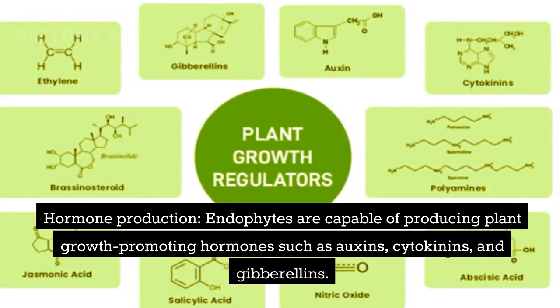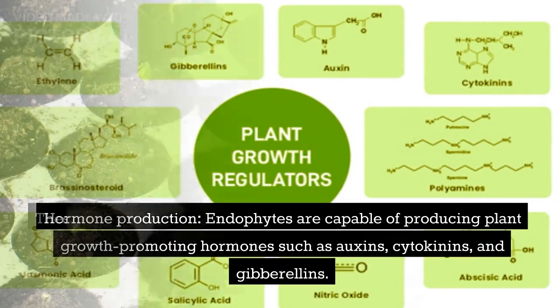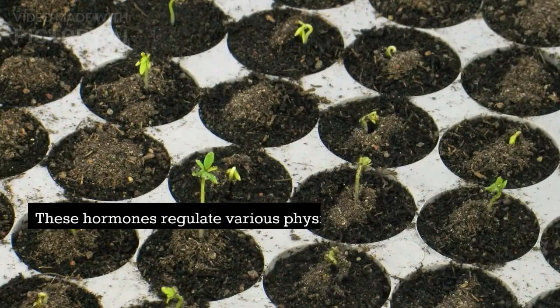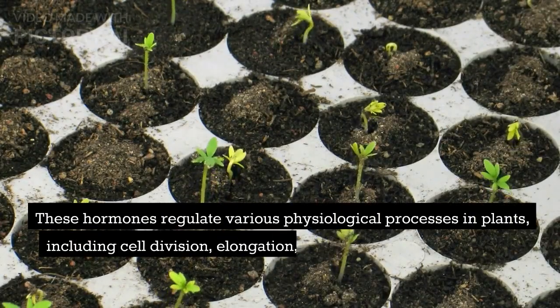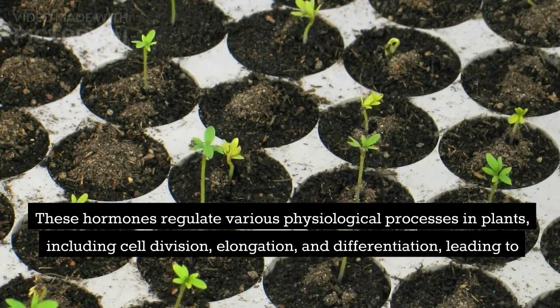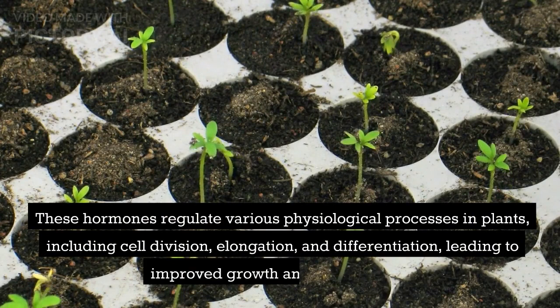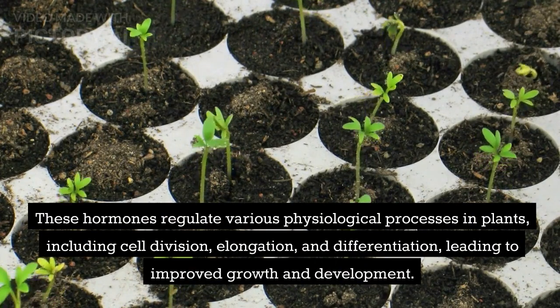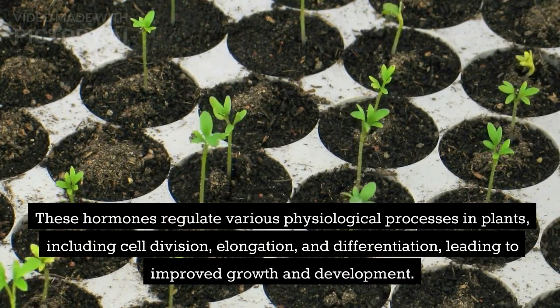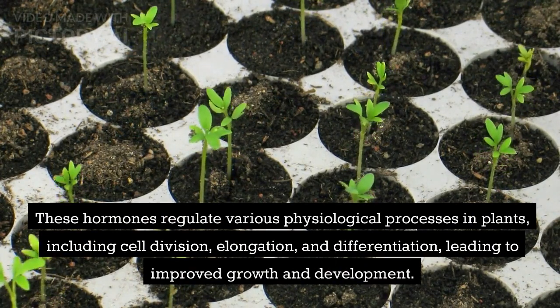Hormone production: endophytes are capable of producing plant growth-promoting hormones such as auxins, cytokinins, and gibberellins. These hormones regulate various physiological processes in plants, including cell division, elongation, and differentiation, leading to improved growth and development.